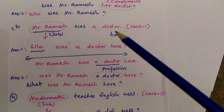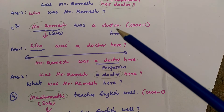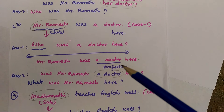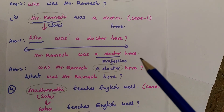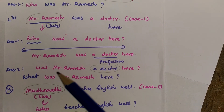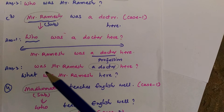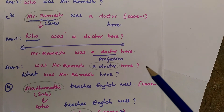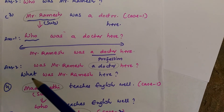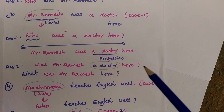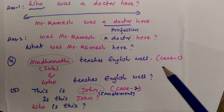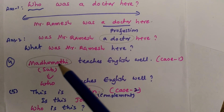Number two: 'Mr. Ramesh was her doctor.' This is case number three — persons are found both in the subject place and the complement place, so we get two answers. For the subject answer: remove 'Mr. Ramesh' and write 'who'. Answer: 'Who was her doctor?' For the second answer, we change the verb to interrogative form: 'Was Mr. Ramesh her doctor?' Then 'her doctor' is removed and 'who' is written at the beginning of the sentence.